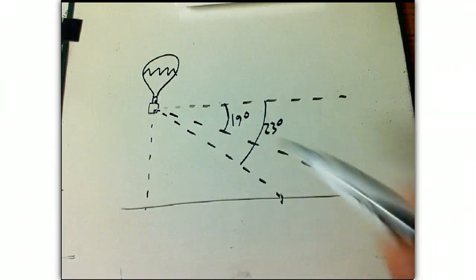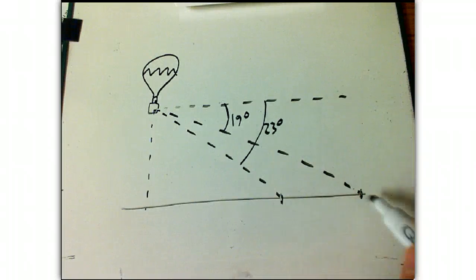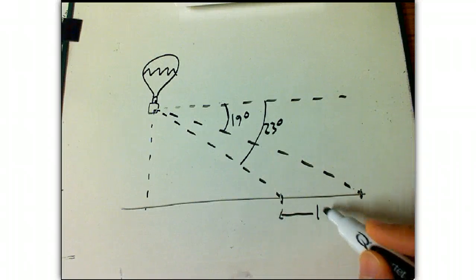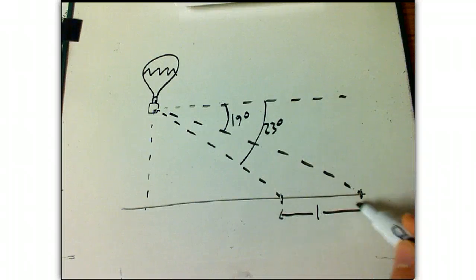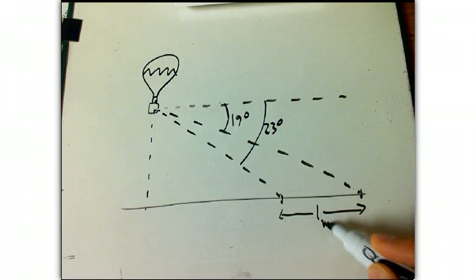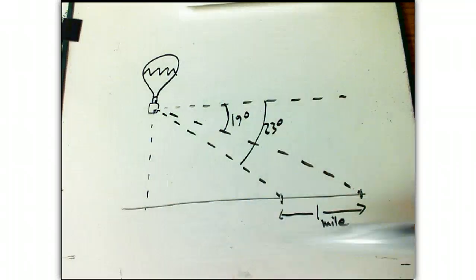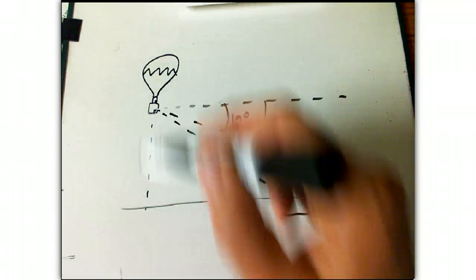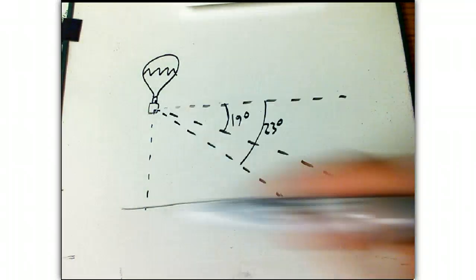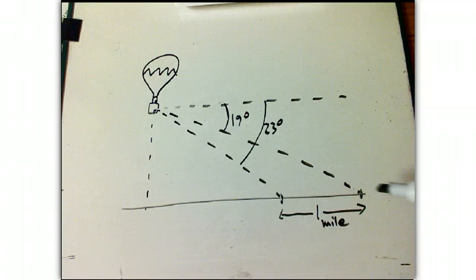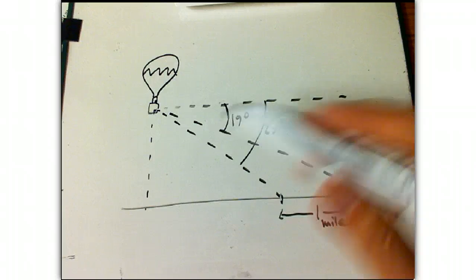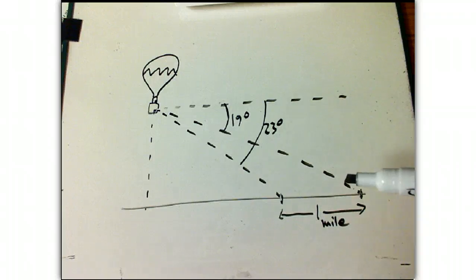So what's the distance here? These are consecutive mile markers, so we actually know this distance is one mile. Now the problem is that's not the side of a right triangle. There's a right triangle here and there's a right triangle there, but that one-mile distance is not the side of either one. We'll have a slicker method soon using the law of sines, but we can do it with right triangles.